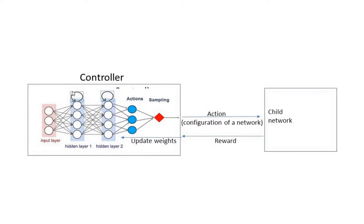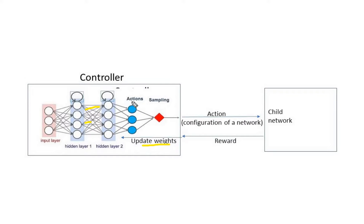The controller is an RNN network. In the input layer it takes hyperparameters — such as how deep we want the network and training time constraints — and the action it proposes is the network configuration: which blocks to use, what filter sizes to use. This child network is then trained on sample training data and tested on the validation dataset. The resulting accuracy is passed as a reward to the RNN, which updates its weights, so in the next iteration it proposes better network configurations.